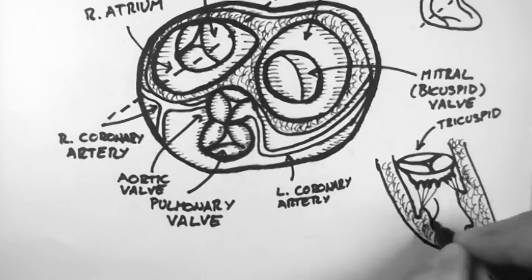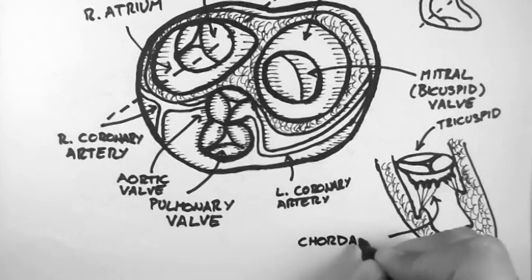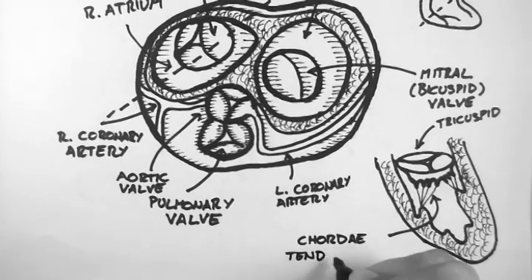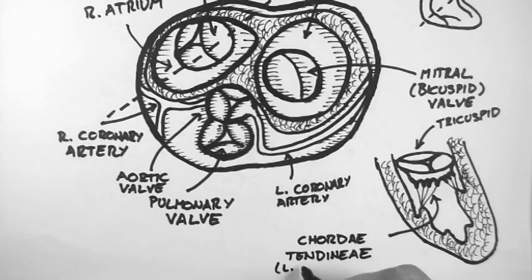And from the leaflets of the tricuspid valve, or from the three cusps, are these chordae tendiniae. And this is Latin for heartstrings, which is kind of cute.